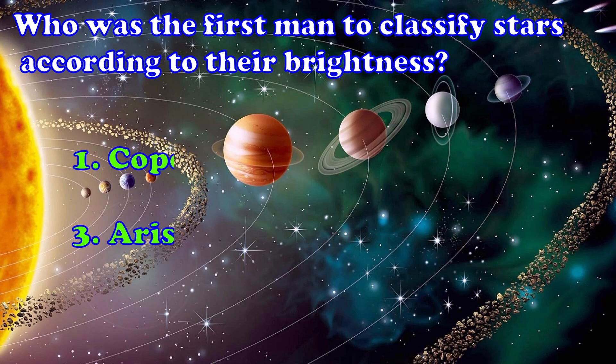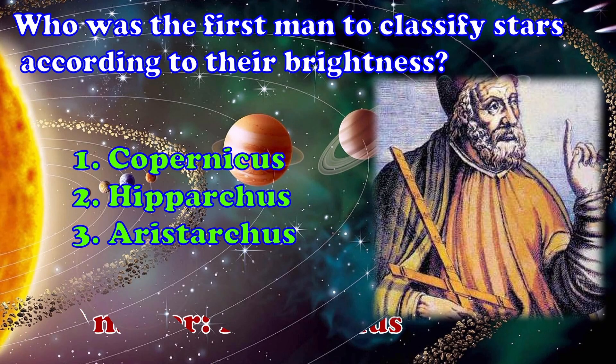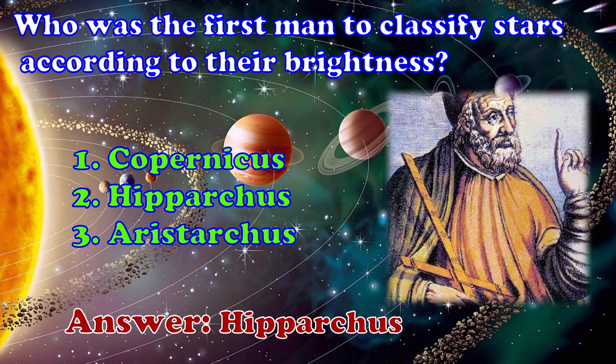Who was the first man to classify stars according to their brightness? 1. Copernicus 2. Hipparchus 3. Aristarchus. Answer, Hipparchus.